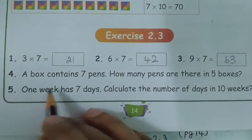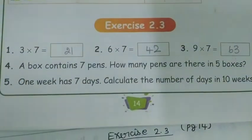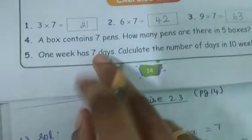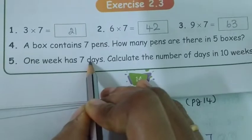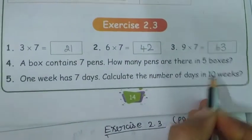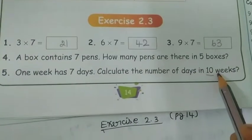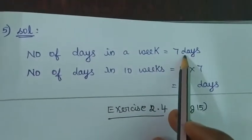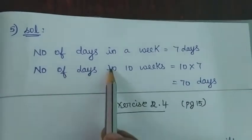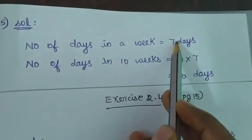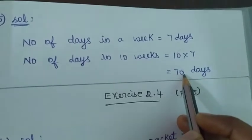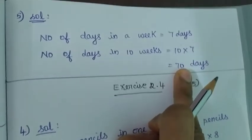Next question, fifth question: one week has how many days? 7 days — Sunday, Monday, Tuesday, Wednesday, Thursday, Friday, Saturday. One week has 7 days. Calculate the number of days in 10 weeks. Take the note and write fifth question solution. Number of days in a week equals 7 days. Number of days in 10 weeks equals 10 sevens are 70 days. 10 weeks equals 70 days.